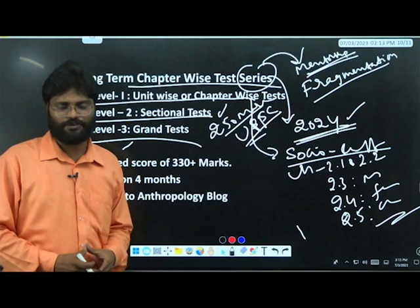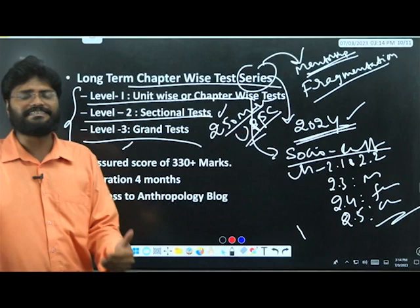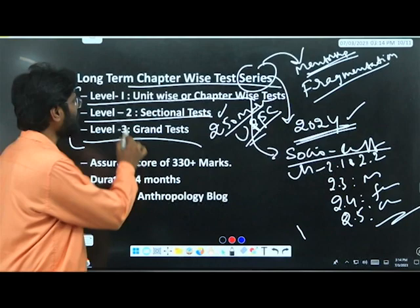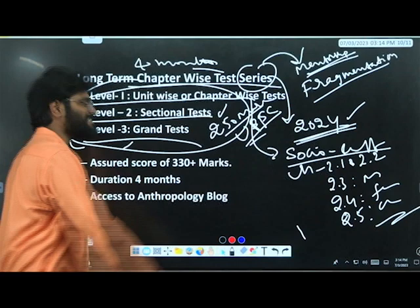The same thing will replicate for paper two also. Every unit in Indian society and civilization, later every unit in tribal India, and after that sectional test on Indian society and civilization and sectional test on tribal India. This is the way long-term test series works - you can take it as the next four months. Study each chapter, each concept, make notes for each chapter and each concept.